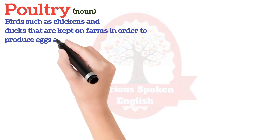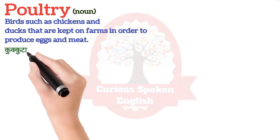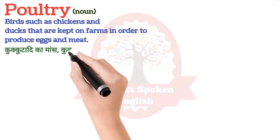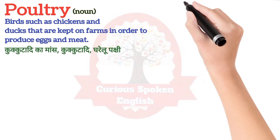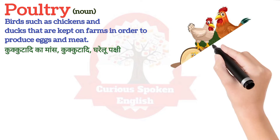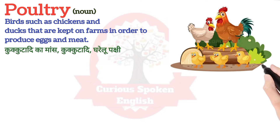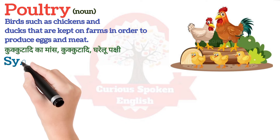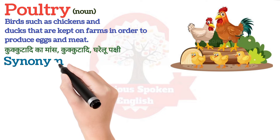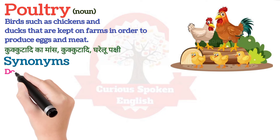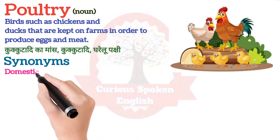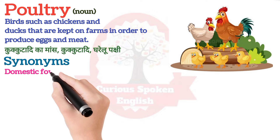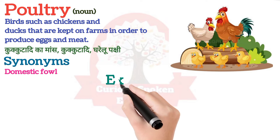Poultry in English refers to birds such as chickens and ducks that are kept on farms in order to produce eggs and meat. Poultry in Hindi is kukkutadi ka maas, kukkutadi, or gharelu pakshi. Poultry in English is also referred to as domestic fowl.